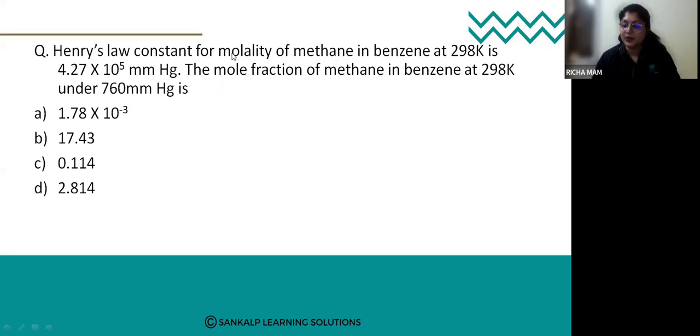So what are the given entities? Let us write first. Given is Henry's constant, that is 4.27 × 10^5 mmHg, and pressure is given, that is 760 mmHg.